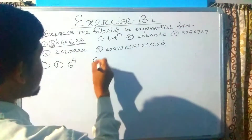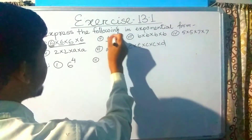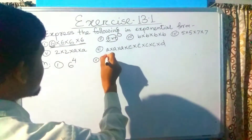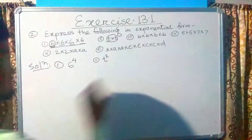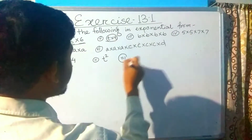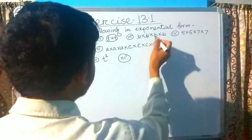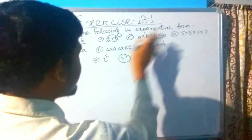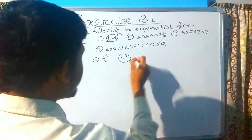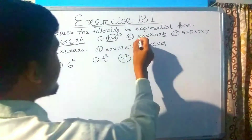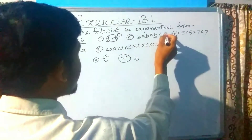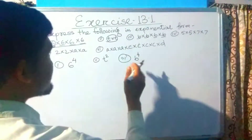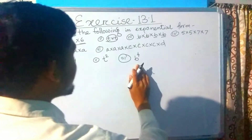The second one is t multiplied by t — 2 times. So the exponential form is t squared. The third one is b multiplied by b multiplied by b multiplied by b multiplied by b. The base is b, and counting the times: 1, 2, 3, 4 — it is 4 times. So the power will be 4, and the exponential form is b raised to the power 4.